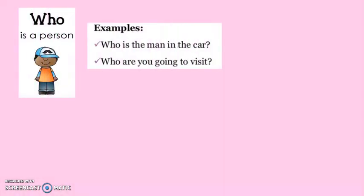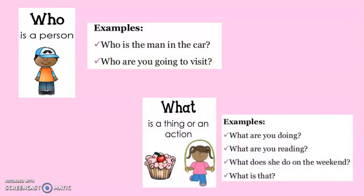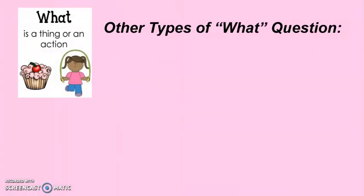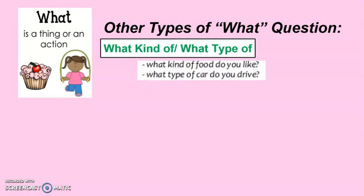'Who' is used in questions as the subject of the verb — it's used to ask about people. 'What' is used in questions to ask about things, activities, or actions. There are other types of 'what' questions: 'what kind of' or 'what type of' is used to talk about specific things or characteristics — for example, 'What kind of food do you like?' or 'What type of car do you drive?'